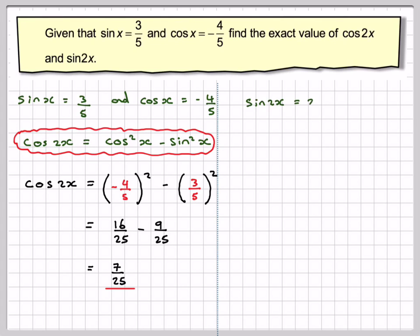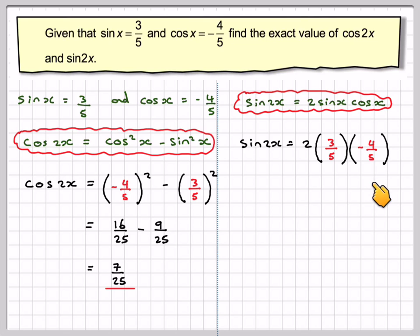For sine 2x, we know that sine 2x is 2 sine x cos x. Therefore sine 2x will be 2 times sine x, which is 3 fifths, times cos x, which is minus 4 over 5. And that's just going to give me minus 24 over 25.